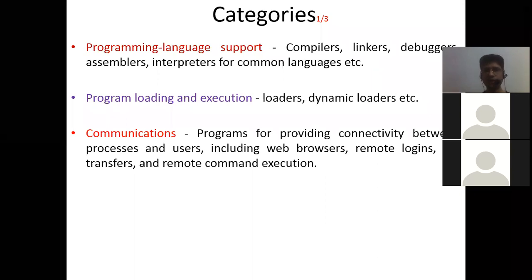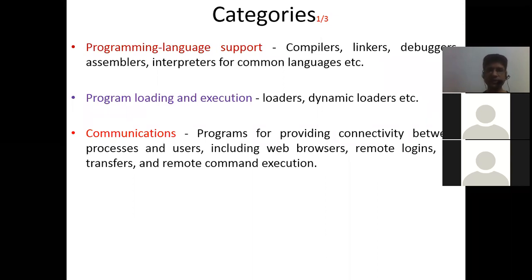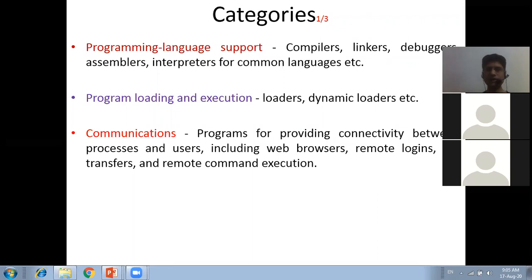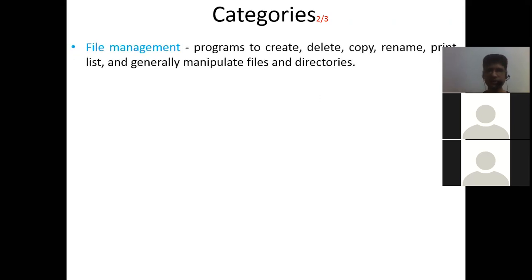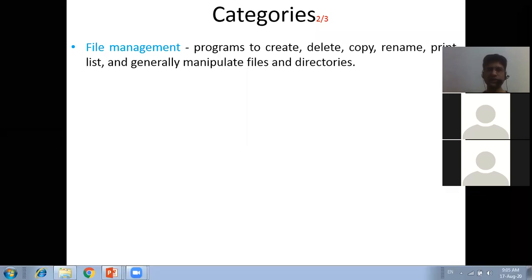So far the categories we have seen are: programming language support, program loading and execution, and communications. There are multiple activity needs by user applications that need OS services. These services were previously provided only by the kernel, but now we have designed separate system application programs to provide them. Next is file management - programs to create, delete, copy, rename, print, list, and generally manipulate files and directories.